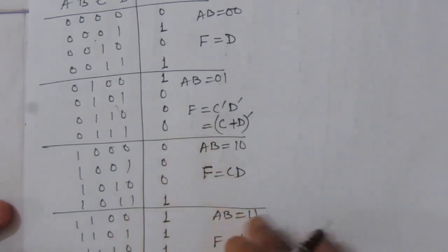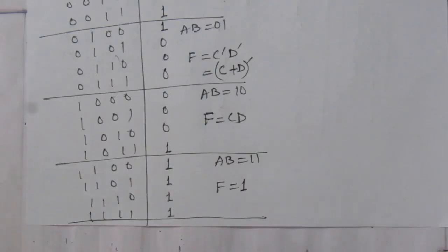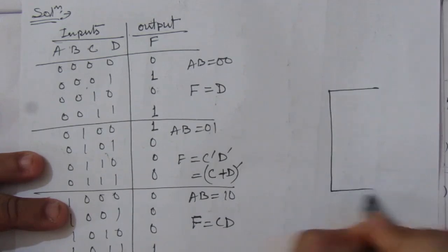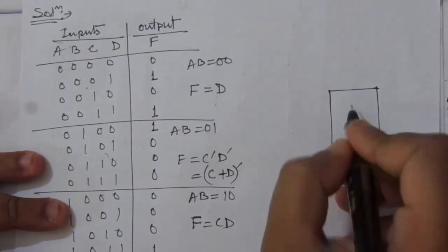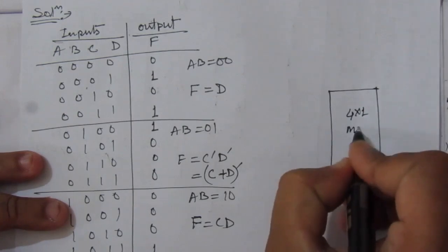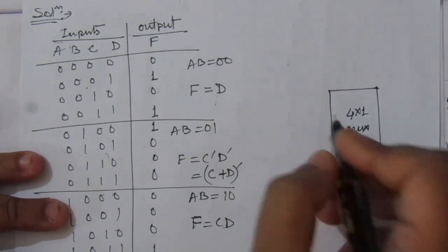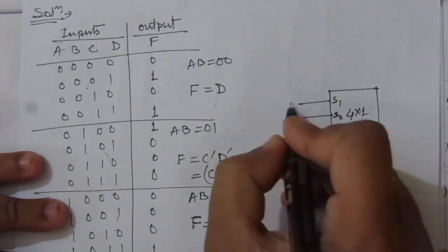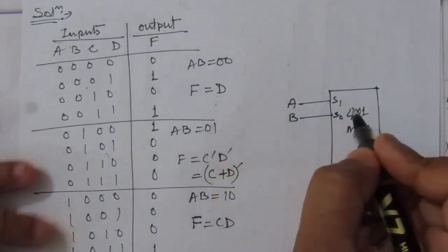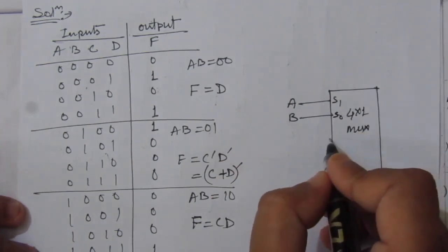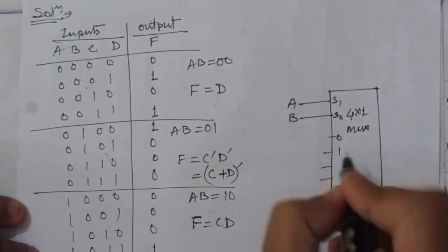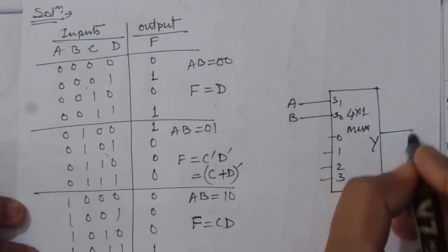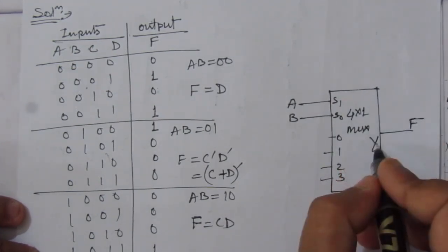So we have got the output relationships. Now let us draw the circuit. We will have one 4-to-1 multiplexer. So here we will have two select lines S1 and S0. They will be connected to A and B as given in the question. And we will have four inputs: 0, 1, 2, 3, and one output Y which is F.